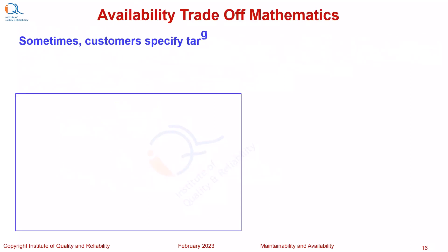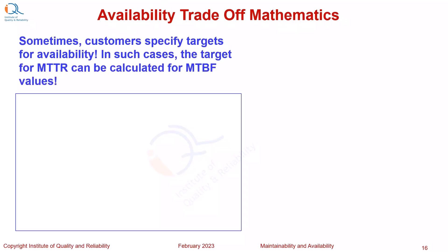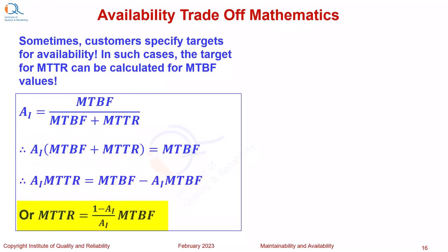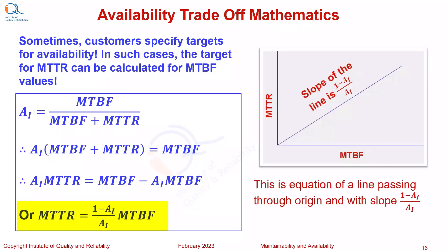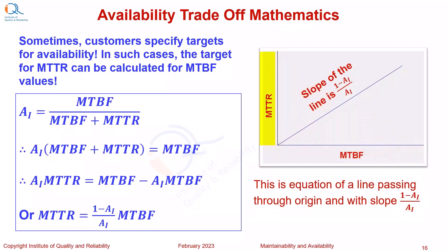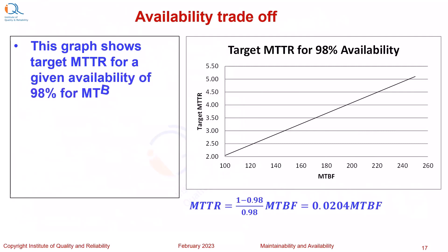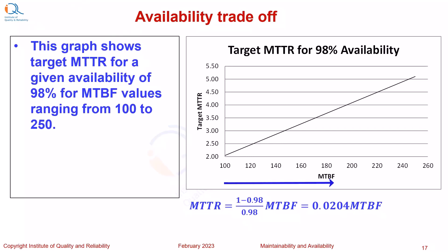Sometimes customers specify targets for availability. In such cases, the target for MTTR can be calculated for given MTBF values. We have seen that AI equals MTBF upon MTBF plus MTTR. Simplifying, MTTR equals 1 minus AI upon AI, multiplied by MTBF. This is the equation of a line passing through the origin with slope 1 minus AI upon AI. The graph shows MTBF on the x-axis and MTTR on the y-axis, and this particular graph shows target MTTR for a given availability of 98% for MTBF values from 100 to 250.